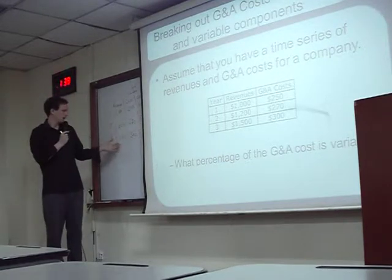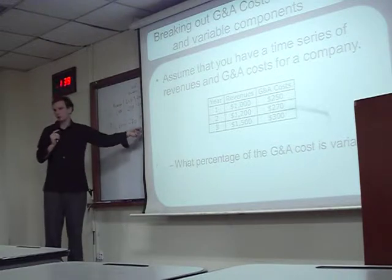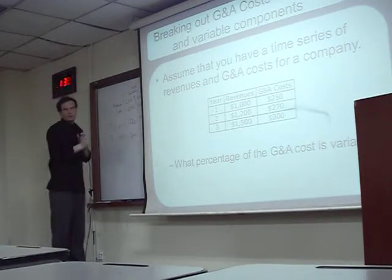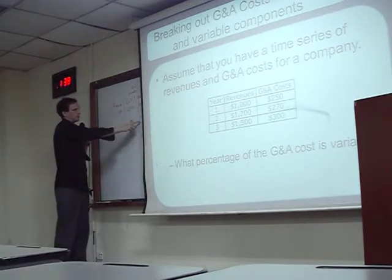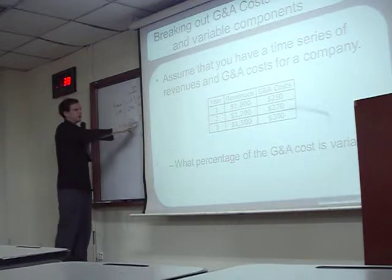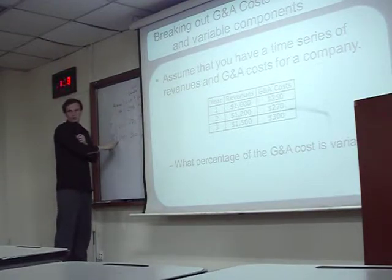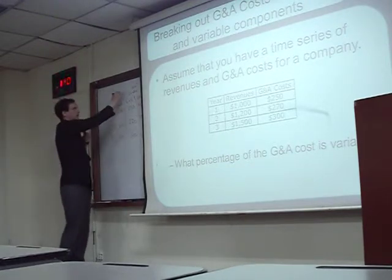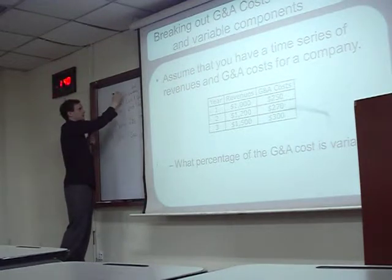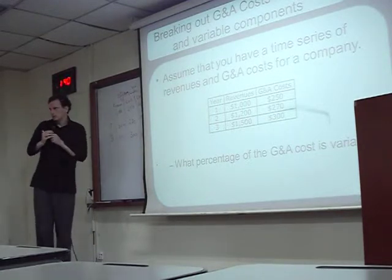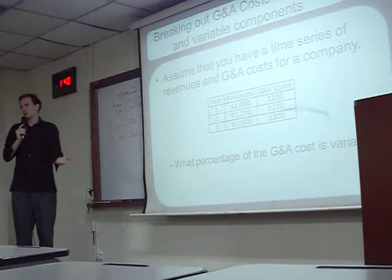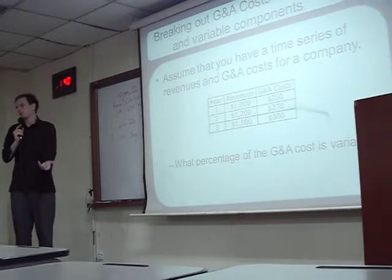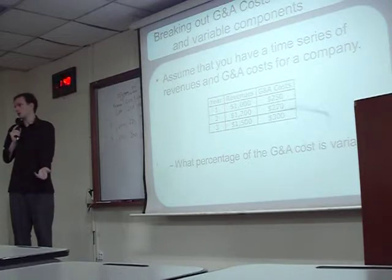Year three — the revenue goes up, the variable cost goes up more. The variable cost goes up 20, the revenue goes up 200; the variable cost goes up 30, the revenue goes up 300. How much is the variable cost as a percent of revenue? Ten percent. So the variable cost is going to be ten percent of revenue. This was the first thing we figured out: the general and administrative cost changes by ten percent of whatever our revenue changes. That's an important number.